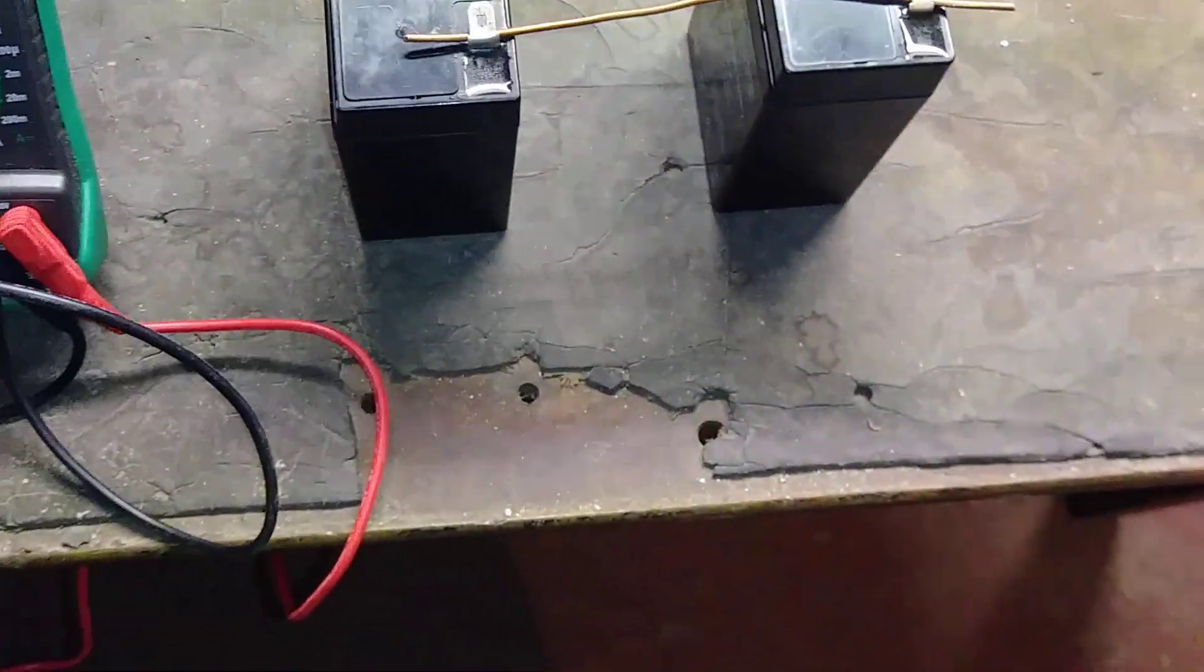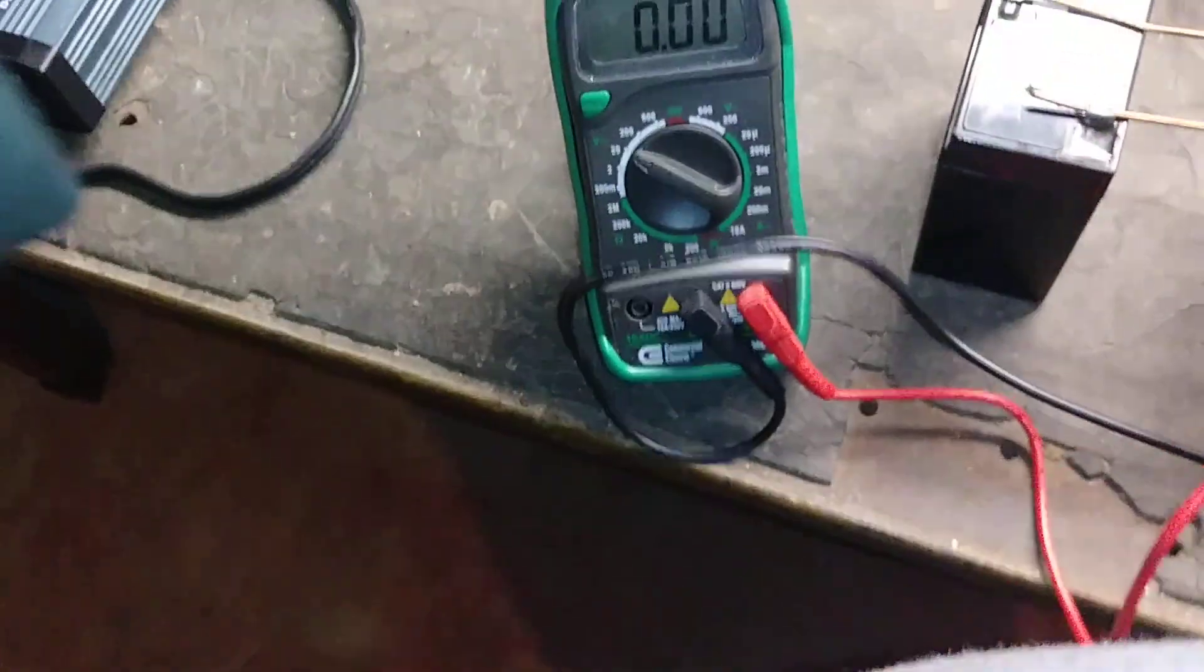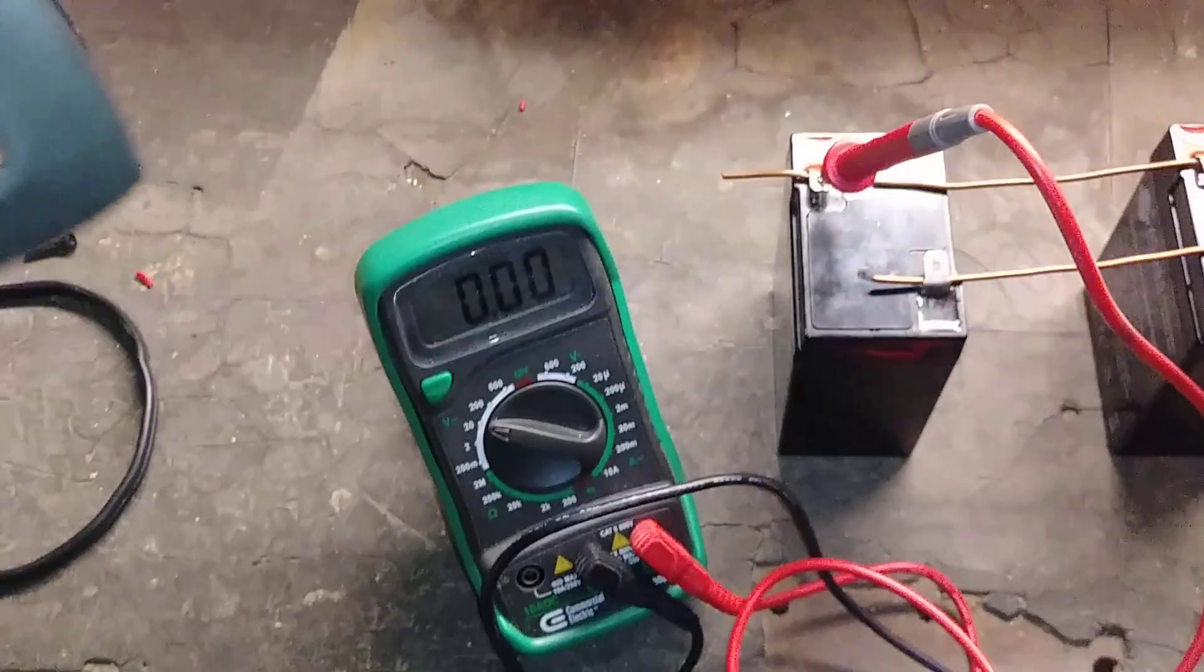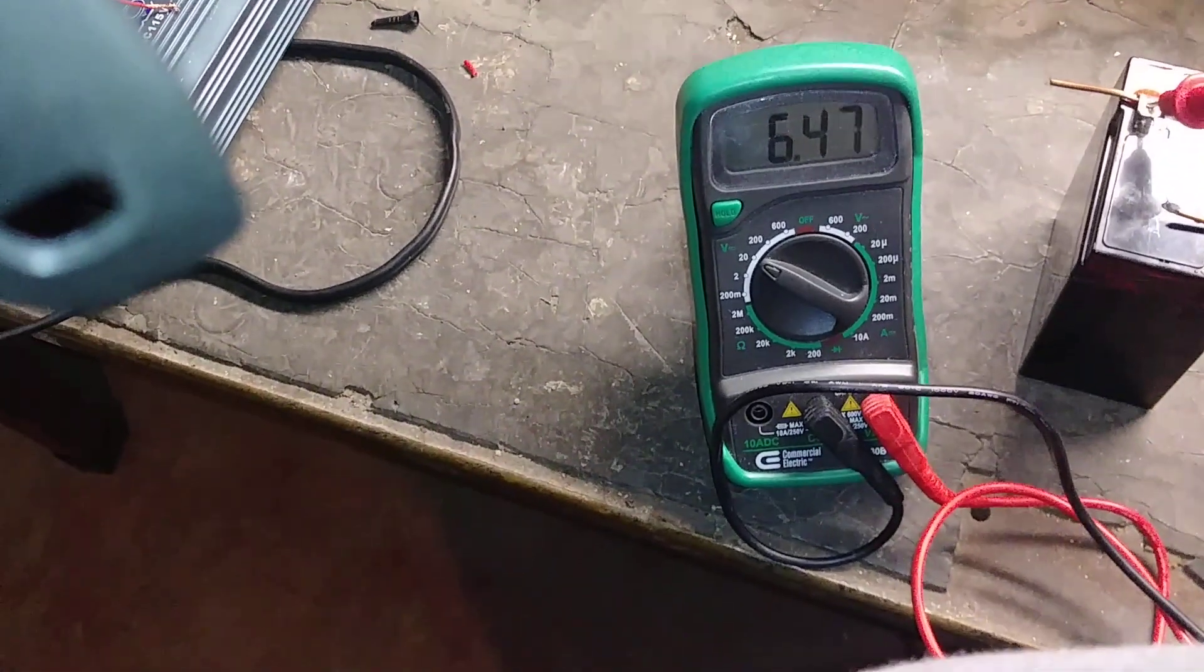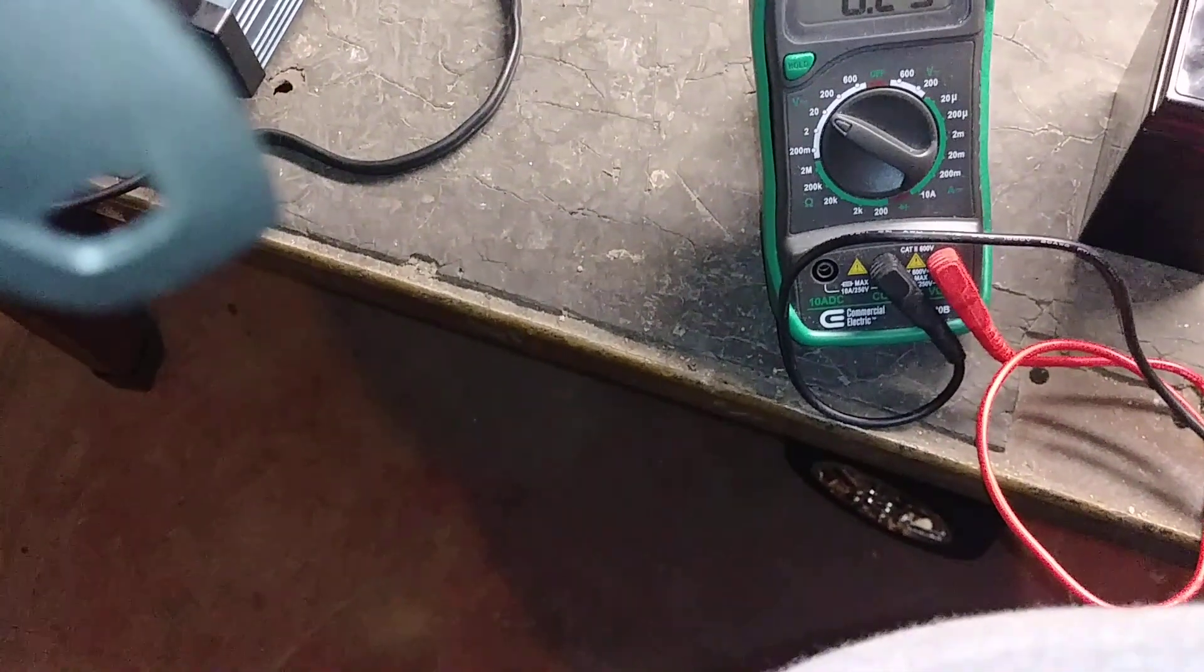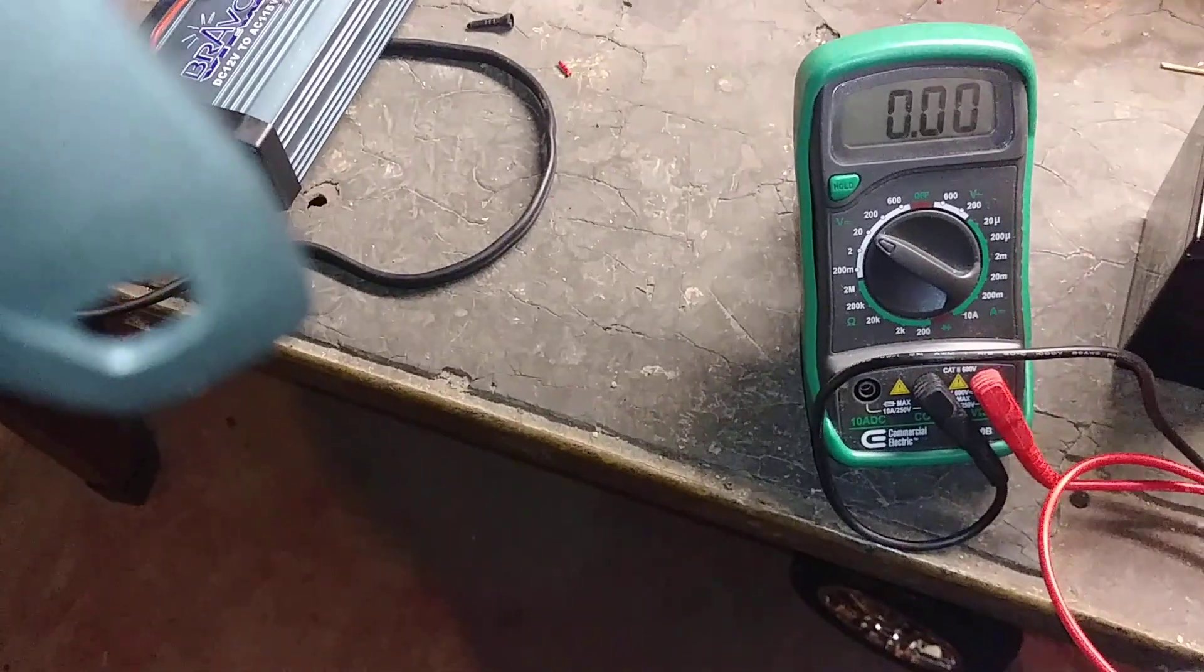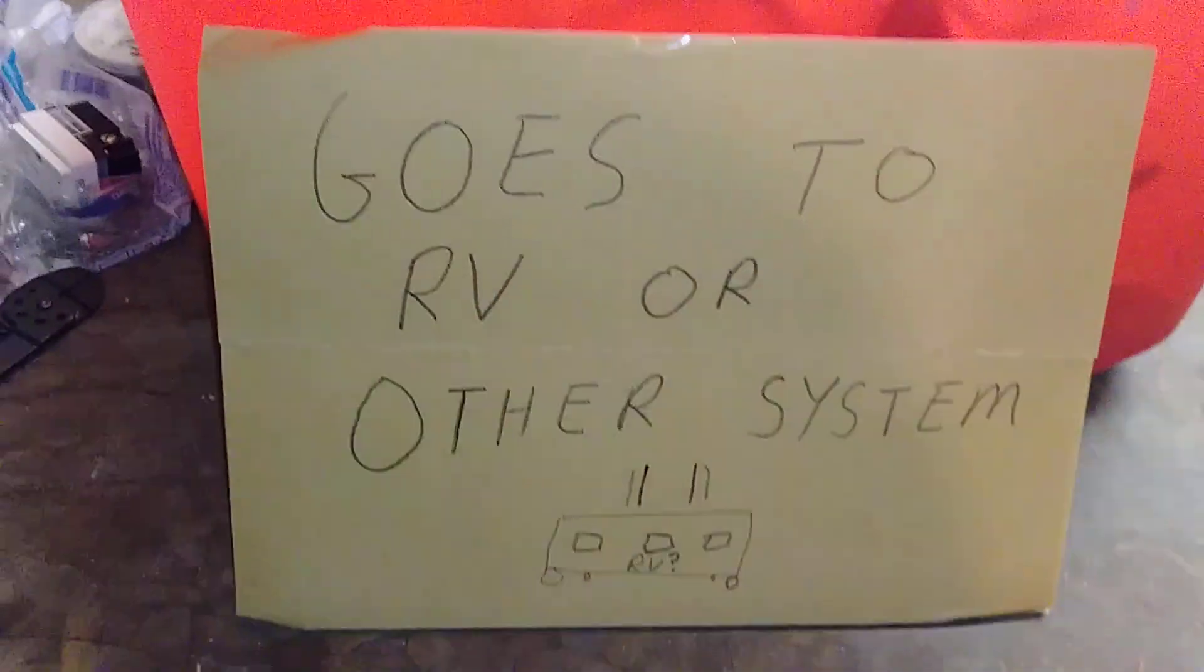If we look at the multimeter, this is how you would test this. You would put the positive on one battery and then the negative on the other battery. We can see that we're at about 6.48 volts. That is basically one battery that you could use on a six-volt system.